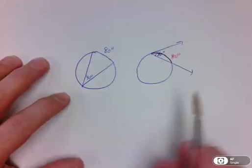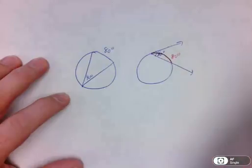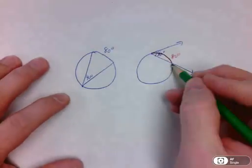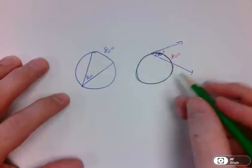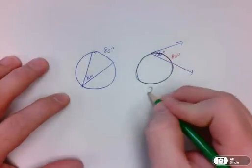And that should kind of make sense, because if this arc is 80, how much arc is left over for the rest of the circle? If the red one there is 80, how much is left over for the green one? Well, that would be 360 total, so 280 degrees.